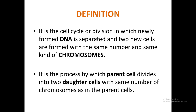Now, here is a short description of mitosis. Mitosis is a type of cell division — a life cycle — in which newly formed DNA is separated and two new cells are formed, each with the same number and same kind of chromosomes as the parent cell. In other words, it is a process in which a parent cell divides into two daughter cells with the same chromosome number.